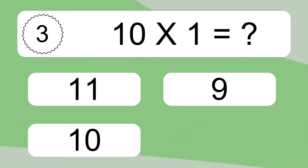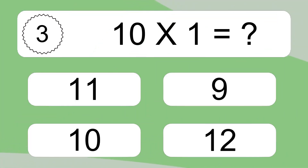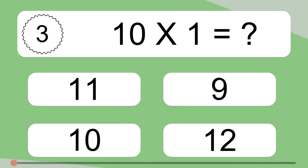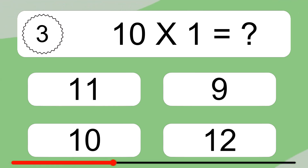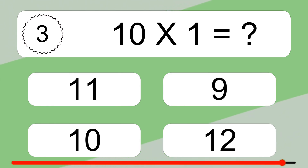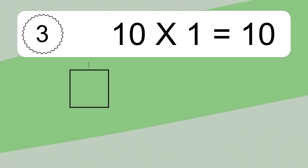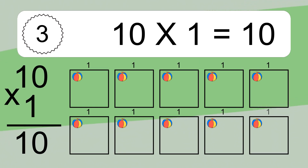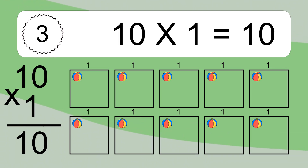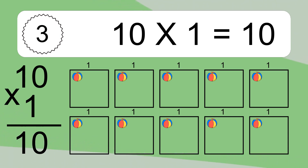10 times 1 equals what? We have 10 boxes, and each box has 1 colorful ball inside. If you count all the balls in all the boxes together, you will have 10 times 1 balls. This equals 10 balls.